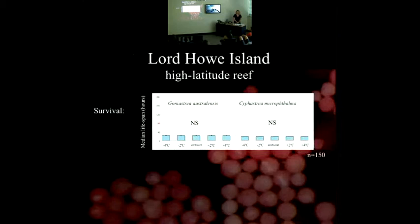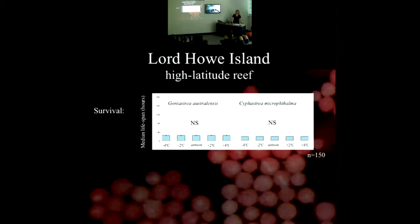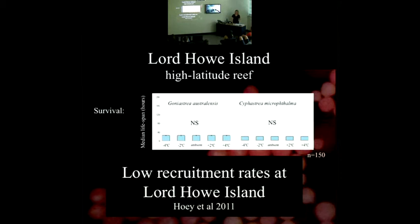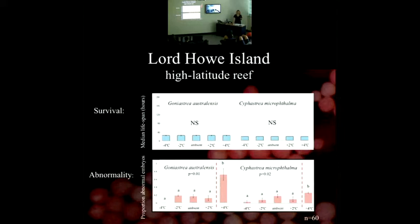At Lord Howe Island, we collected data for Goniastrea osteolensis and Cyphastrea microphtalma. The first thing you'll notice is that the lifespans were very low — the median lifespan wasn't more than a couple of days, and there was no effect of temperature on survival. This could be due to unhealthy gametes or a bad spawning year, but this is also consistent with observations of low recruitment rates at Lord Howe Island. Interestingly, we did get an effect of temperature on the proportion of abnormal embryos, where somewhere between two and four degrees was a threshold that significantly increased rates of abnormal development.